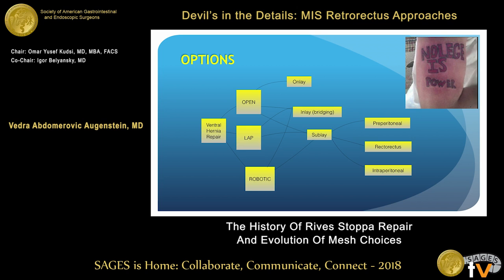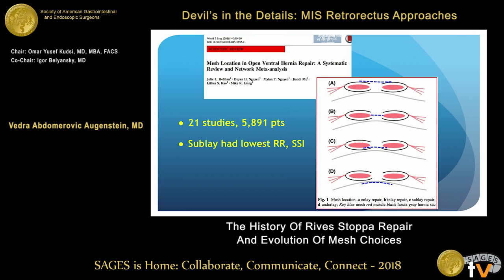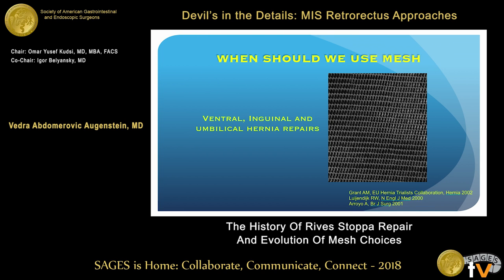There are a lot of different options for repairing a hernia. When I was a resident there were very few options, and it wasn't a hard decision-making process. Now when you see patients, you have all these different options: where you're going to place the mesh, what technique to offer, and what risk factors to modify prior to and during surgery. Looking at the literature, Mike Leang did a very nice review of 21 studies and almost 6,000 patients. The sublay repair seems to have done the best for recurrence rate and surgical site infection, and that's what you'll see from the speakers today.